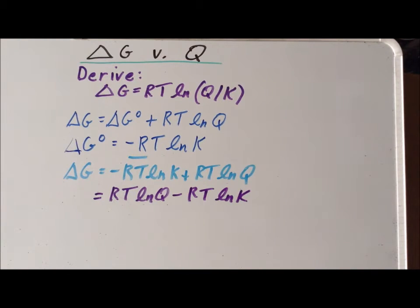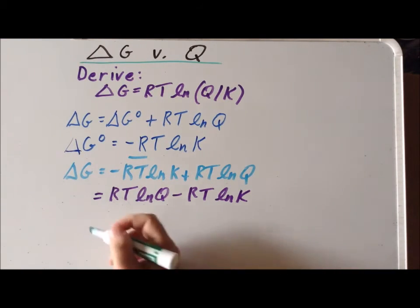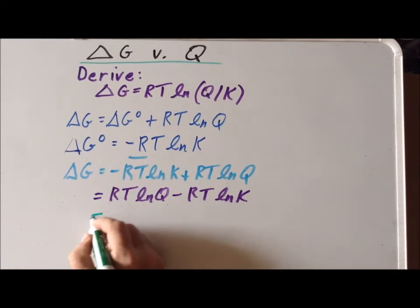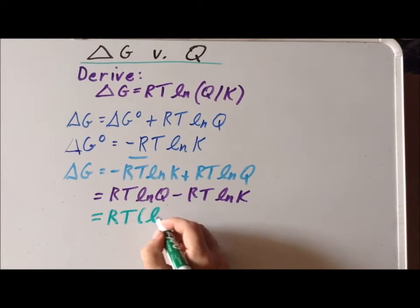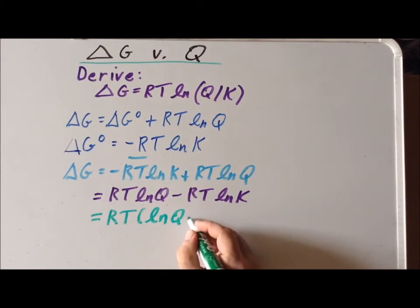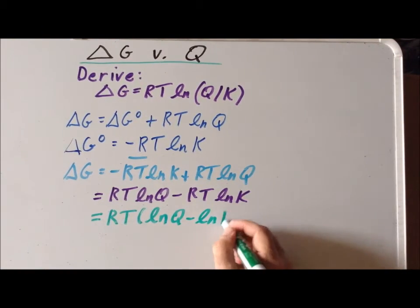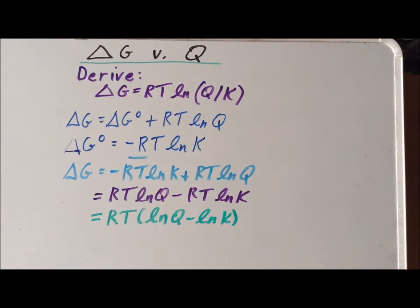Now that we've accomplished that, we can factor out an RT from each of the two terms. So we have RT times the natural log of Q minus the natural log of K.